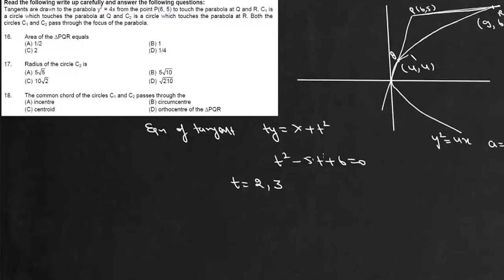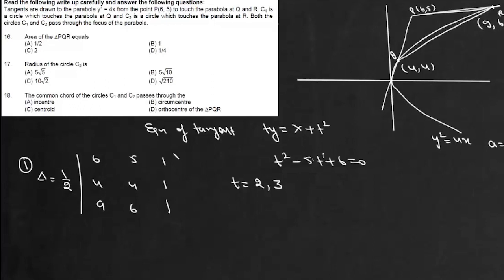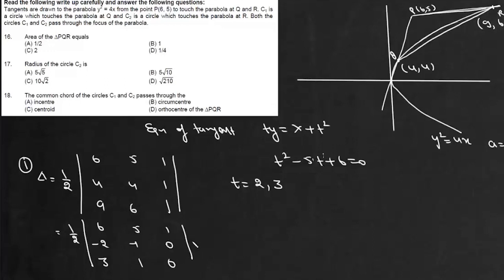The first part asks for the area of triangle PQR. Using the determinant formula, area = ½|det([6,5,1; 4,4,1; 9,6,1])|. Subtracting rows, we get row operations giving a determinant of 1, so the area is ½. That is option A.